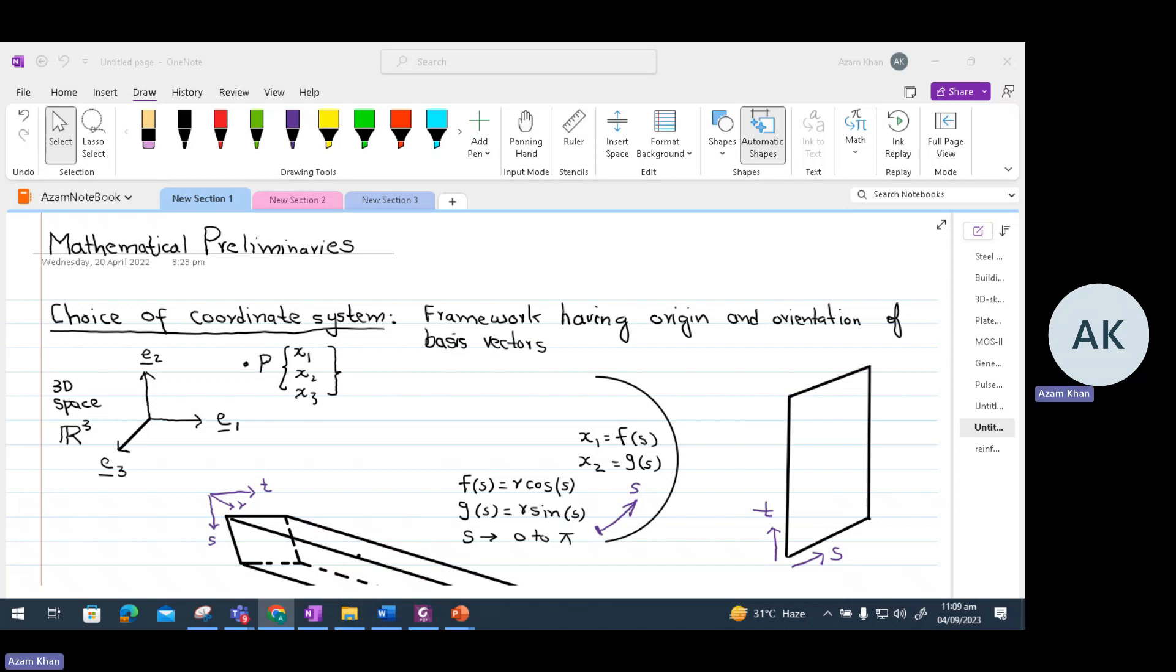There are several types of coordinate systems that are used in structure mechanics, such as the well-known Cartesian coordinate system. We can see a Cartesian coordinate system on the screen. This coordinate system is drawn in a 3D space, which is normally called a 3D real space. This space has got an origin and orientation of basis vectors. We have got three basis vectors in the Cartesian coordinate system. These three basis vectors are completely independent of each other and they can define a point anywhere in a 3D space.